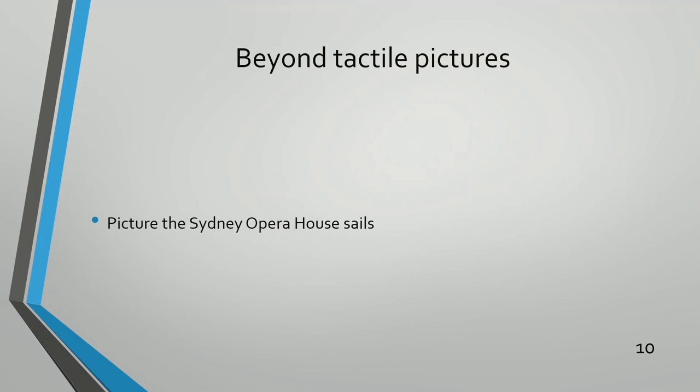So beyond tactile pictures. Picture the Sydney Opera House sails. My daughter, who can't visualise anything, said that's a very discriminatory statement. So have a think about the Sydney Opera House sails and see how you would write alt text to describe them.